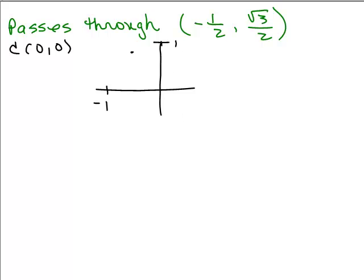So what we need to find out is the radius, because by definition, the distance from the center to the point on the circle tells us the radius of the circle. And once you know the radius, you could write the equation of the circle. To get the radius, we just need to find the distance between those 2 points. So we'll find our radius first.